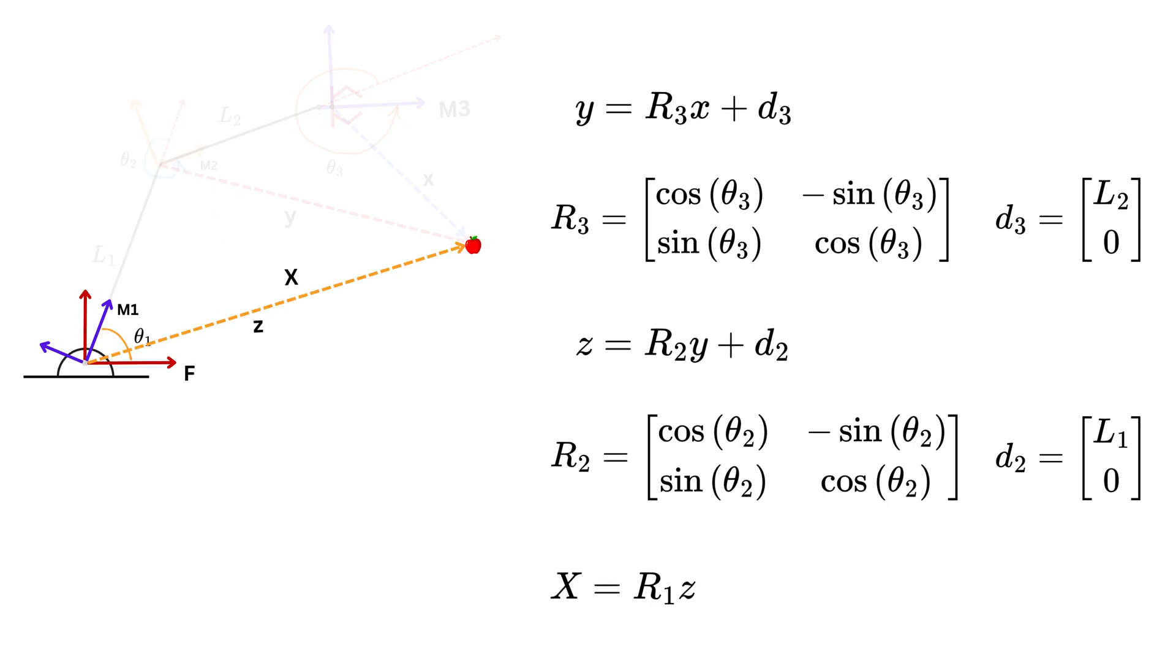Lastly, big X equals r1 times z plus d1. This will be r1 rotation matrix and d1 will be zero, zero because the origin of frame M1 is the same as the fixed frame, so there is no translation.